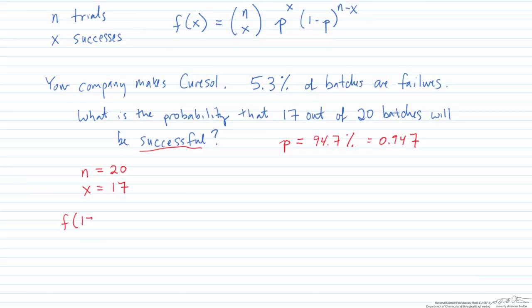So I can use the binomial distribution. f of 17 is just going to be the following. And if you plug this into your calculator or do this on a computer, this will end up being 0.067.